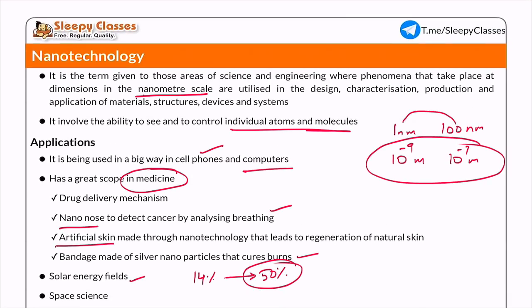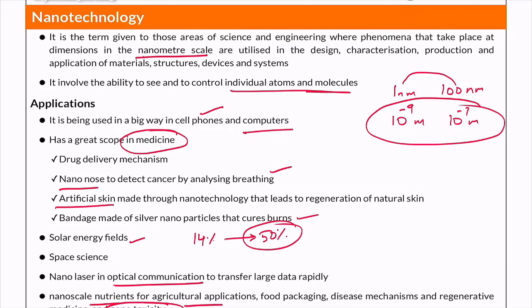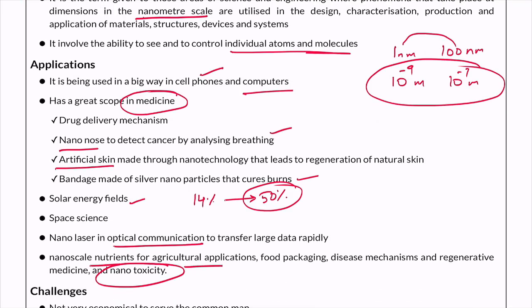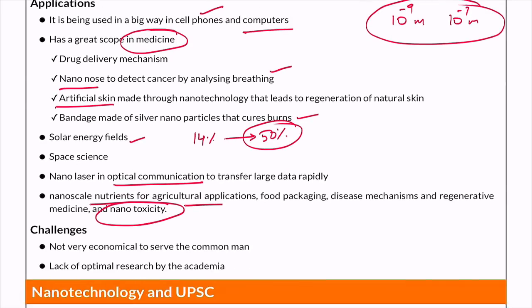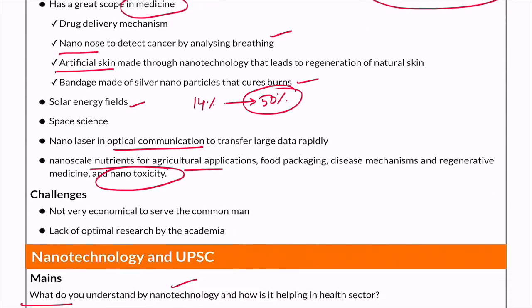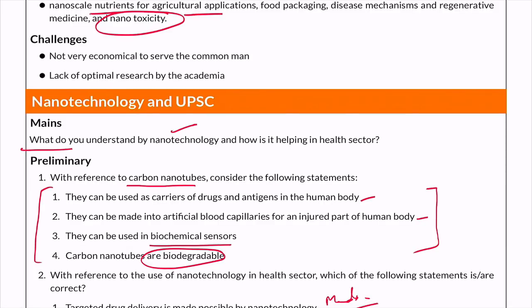So to summarize — what is nanotechnology, what is the nanometer scale, what is the range of particles, what nanotechnology aims to achieve, and how it deals with individual atoms and molecules. We have addressed the applications and seen some prelims and mains questions. That is all for today, thank you.